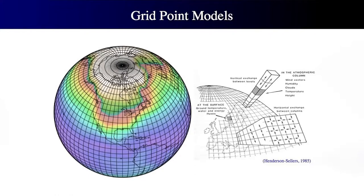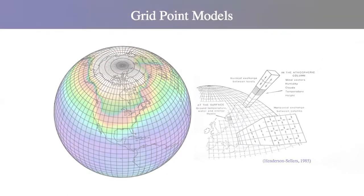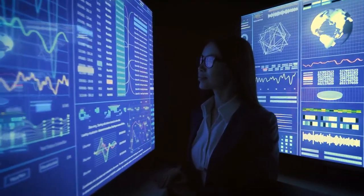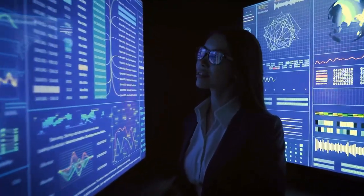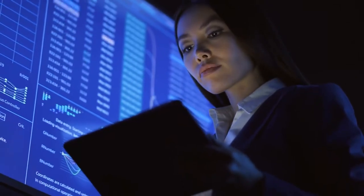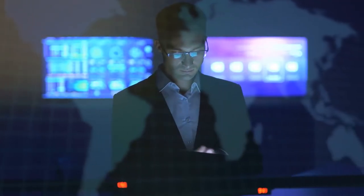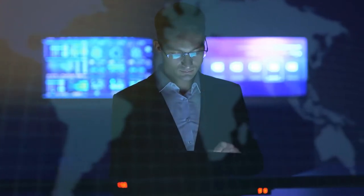GCM grid boxes typically have a resolution of between 250 and 600 km, which is too coarse if we want to know what climate change has in store for a specific country, state, or even a city. Scientists therefore take model outputs calculated on a larger scale and reduce or downsize that output to a smaller scale. This is where downscaling is required.